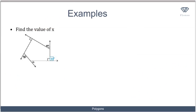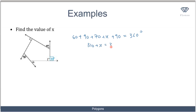In the last example, find x, which is an exterior angle. The sum of exterior angles in a polygon is always 360 degrees. The exterior angles are 60, 90, 70, x, and 90 degrees. So 60 plus 90 plus 70 plus 90 equals 310, and 310 plus x equals 360, giving x equals 50 degrees.